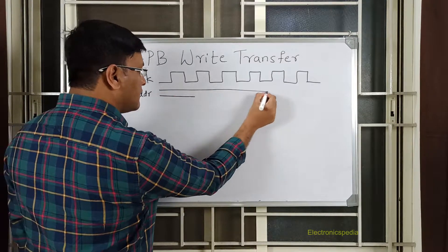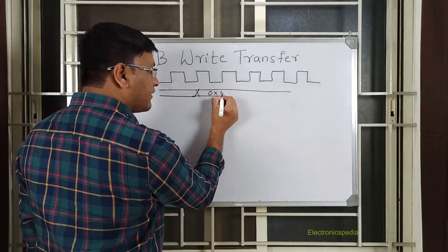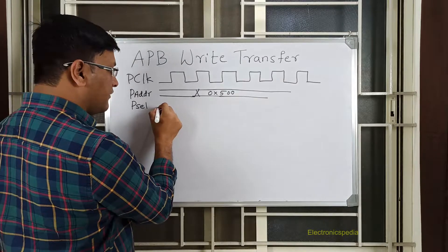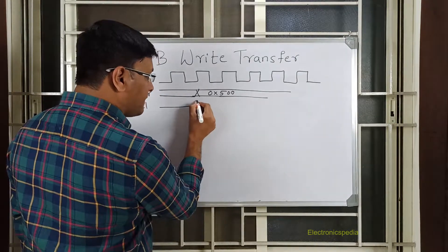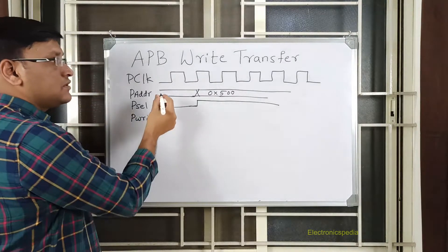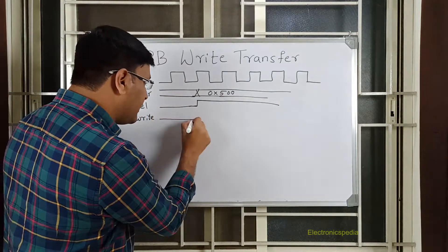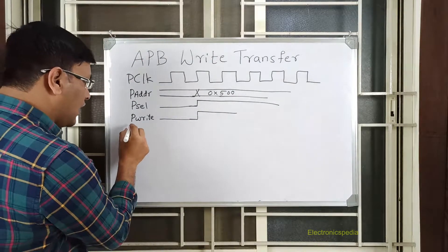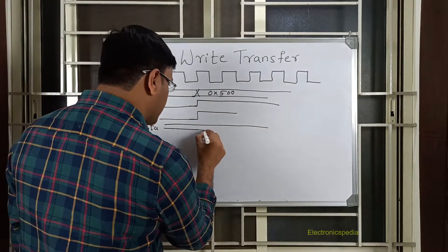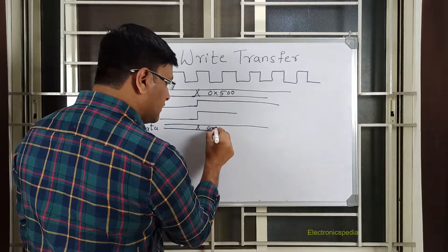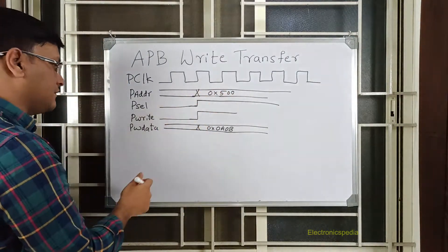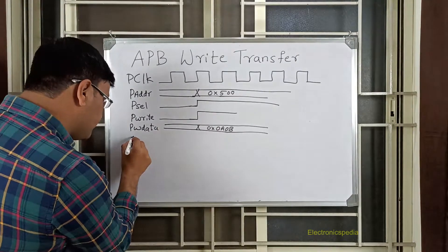So this is my PADDR — I'll draw it as 0x500, which gets asserted. Then I have the signal PSEL, which tells me which particular slave is selected, and this gets asserted. Then I have PWRITE, and since this is a write transfer, PWRITE will be asserted. And then I have the write data PWDATA — I am trying to write data 0x0A and 0x0B into this particular address location.